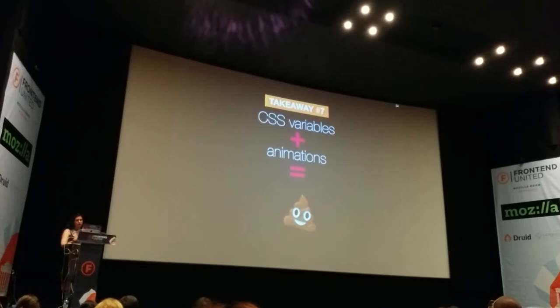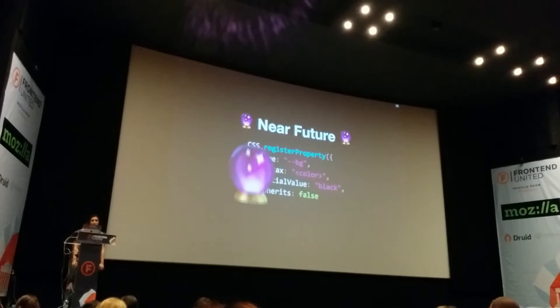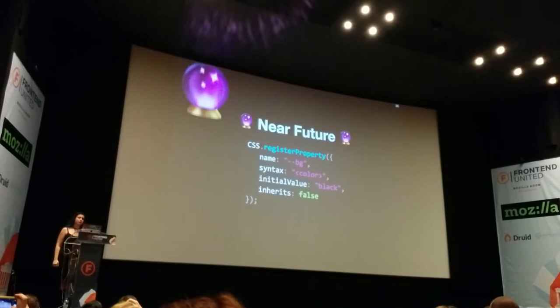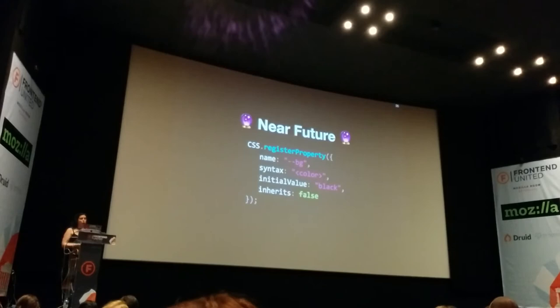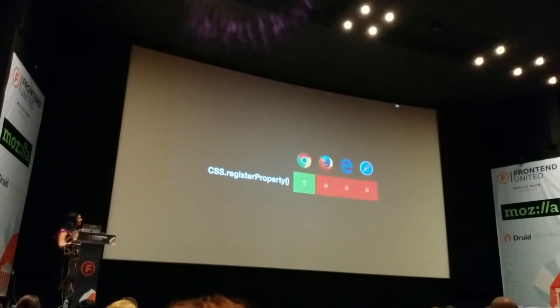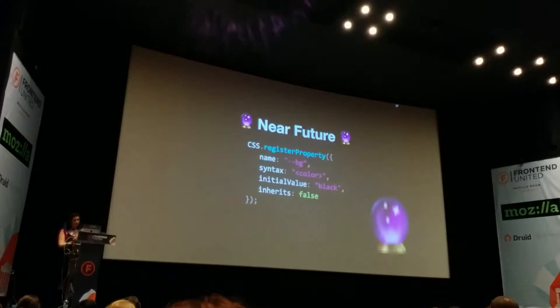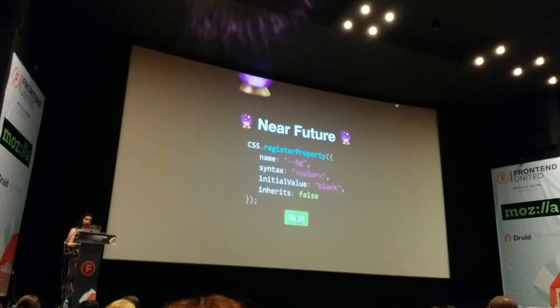That's the seventh takeaway: CSS variables plus animations equals... broken. But there is hope. In the near future, we'll be able to use JavaScript — sadly not CSS, but better than nothing — to define metadata for custom properties: their syntax, initial value, and whether they actually inherit. The browser support for this is quite spotty, and you'll see why there's a question mark in Chrome. I'm in Chrome now and it supports this function behind a flag, so I'll try to run it.